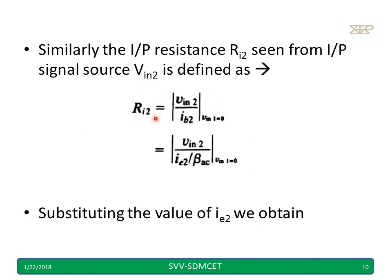Similarly, I can do ri2 equal to vin2 divided by ib2, vin1 equal to 0. Now I will substitute i2 and I rewrite.